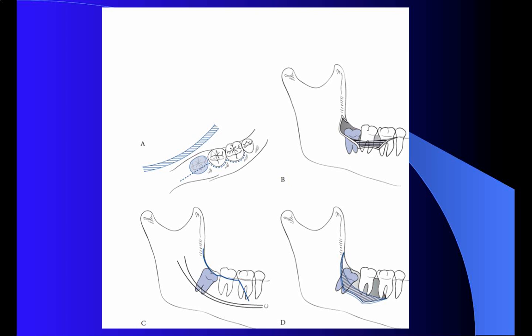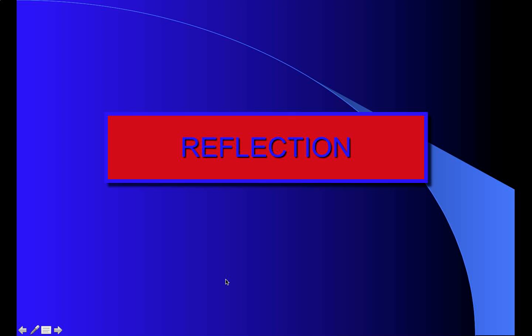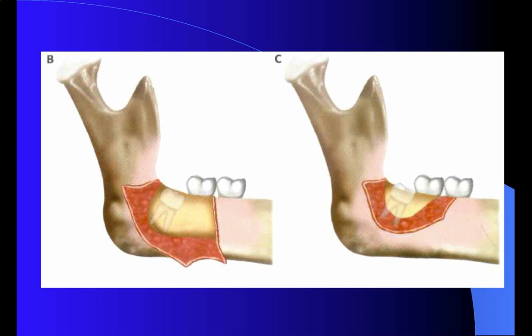You can make an envelope type of flap, as shown by the arrow here, or another kind of flap with one releasing incision, which is called a bayonet flap. Afterwards, in the reflection stage, you push up the gum to expose the bone that surrounds the lower third molar, and you hold this flap with a retractor called a Langenbeck or Faraday.